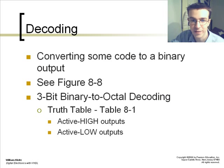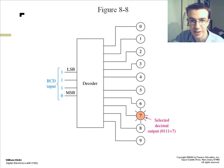In decoding, you convert some code to a binary output. This is seen here. You take your BCD input, your 1110, your LSB to MSB.